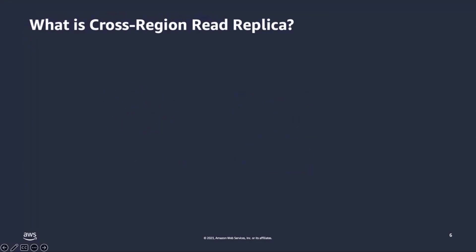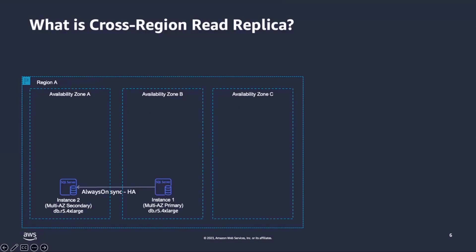Before discussing cross-region read replica, let's understand what a read replica is. Within an AWS region, you have multiple availability zones and you deploy a multi-AZ RDS instance. This creates an Always On replication cluster with a primary and secondary database instance using synchronous replication. When you want to scale your architecture, you deploy a read replica, which uses a distributed availability group and creates asynchronous replication. This read replica instance receives data from the primary and maintains a copy to offload read queries and reduce load on the primary.